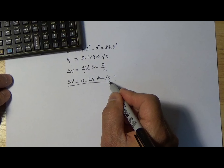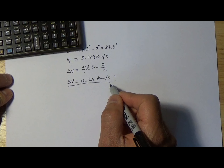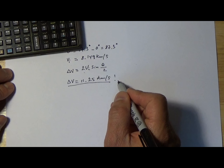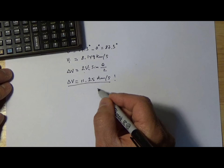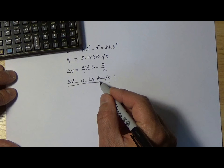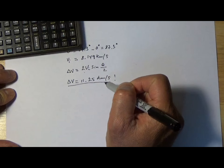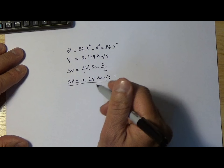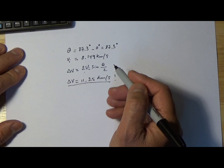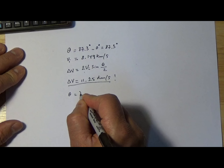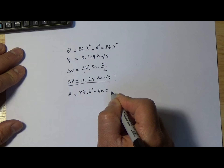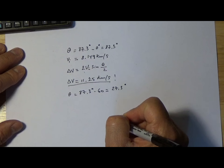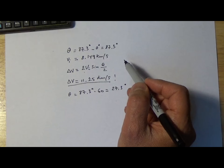That delta-v of 11.25 km/s is huge — much more than it took to launch the spacecraft into orbit, where we achieved a tangential velocity of around 7.7 km/s. We would need almost double the fuel to go from 87.3 degrees to zero degrees, so clearly there is not enough fuel even in the launch configuration to achieve this. On the other hand, if we set our sights on a milder change — say 60 degrees — then theta equals 87.3 minus 60, which is 27.3 degrees.